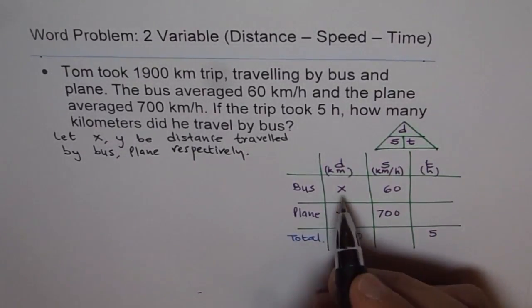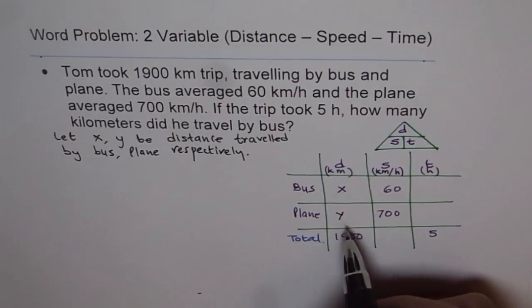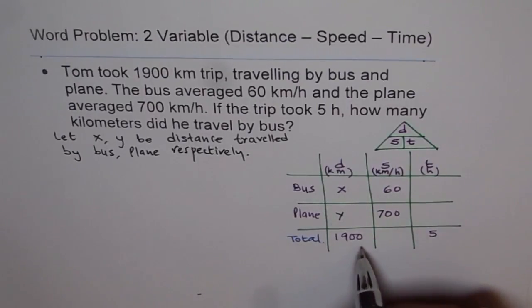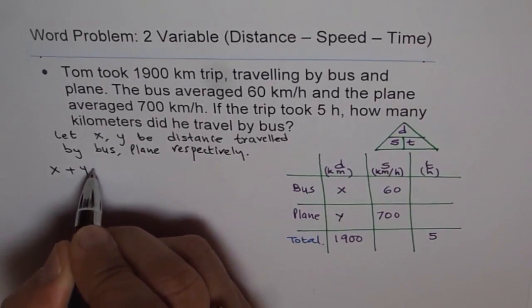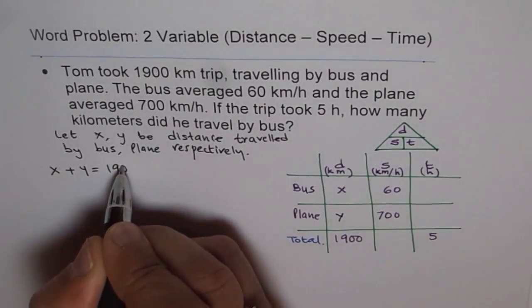Now we can figure out the relation between them. Relation is: X plus Y equals 1900, since that is the total distance. So X plus Y equals 1900.